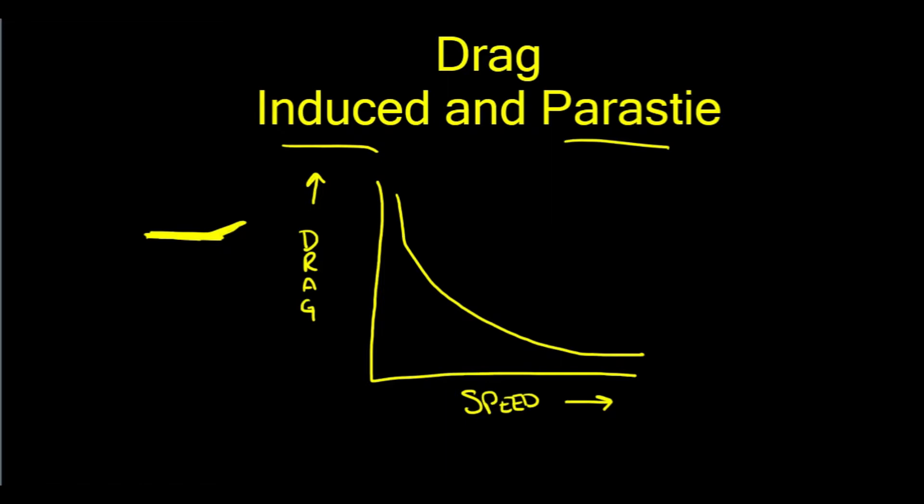And it only makes sense, right? Because the faster we go, the more level we're going to be. Our elevator is more level. Our wings, this is a side view of our wing.